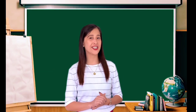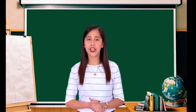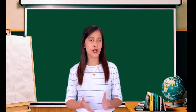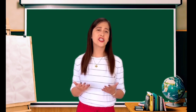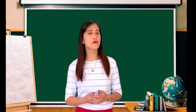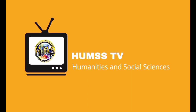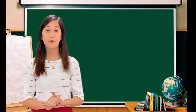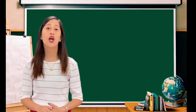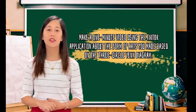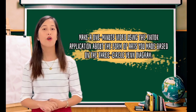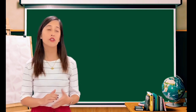To sum up our topic for this episode, we learned that art is created with imagination and skills that express important ideas or feelings. It has its own language and it is understood by those who love and feel the art. For your learning task, differentiate the various contemporary art forms using the three-circle Venn diagram. And for your performance task, make a one-minute video using the TikTok application about the form of art you made based on the three-circle Venn diagram.